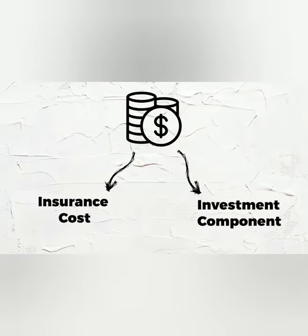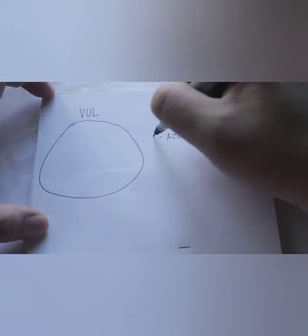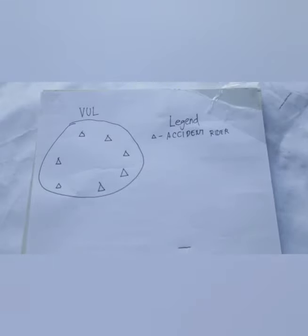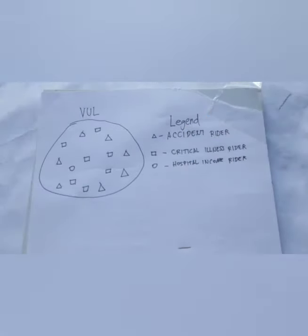VUL, or Variable Universal Life insurance — in simpler terms, insurance with investment linked to it. Basically, when you pay your premiums, part goes to the insurance cost of your policy and the rest goes to the investment component. So the great thing about VUL is as you pay for your insurance, you're also investing at the same time. My analogy for this is it's like pizza dough — in a VUL, you can add different riders, or in our pizza analogy, toppings. You can add an accidental death benefit, a critical illness rider which gives additional compensation if diagnosed with a critical illness, and a hospital income rider which gives you a certain amount per day you're confined in a hospital. There are many other riders, but those are the notable ones.